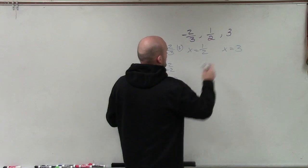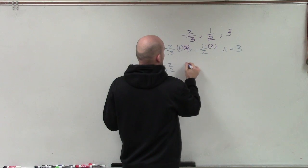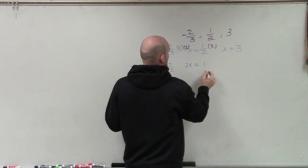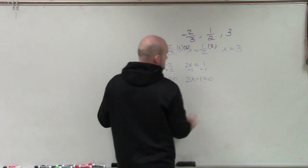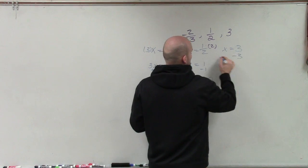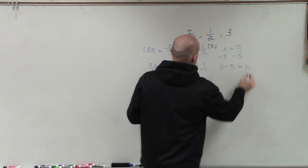I'll do the same thing here. I'll multiply by 2 on both sides and therefore I have 2x equals 1. Subtract the 1, so I have 2x minus 1 equals 0. And here, this is much nicer. Just subtract 3 on both sides, so therefore you have x minus 3 equals 0.